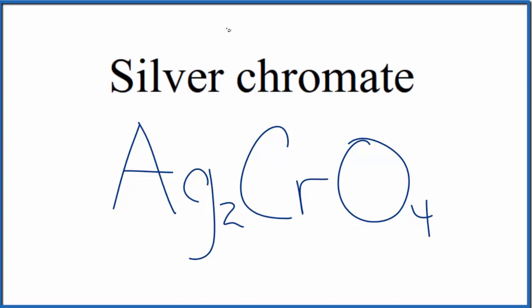Sometimes you'll see this called silver(I) chromate, since silver is a transition metal. And that's because silver would be 1+, we'd have two of them to balance out the chromate. But since silver is almost always 1+, we don't usually write the 1.